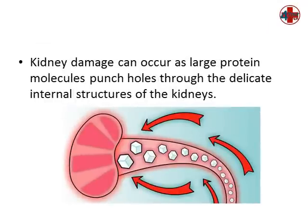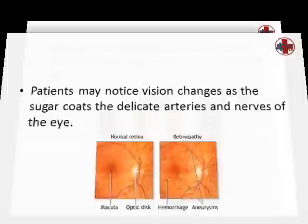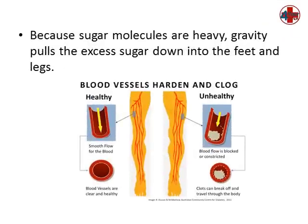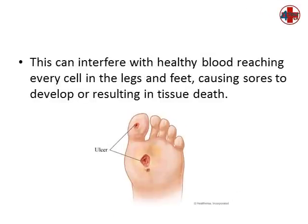Kidney damage can also occur as large protein molecules punch holes through the delicate internal structures of the kidneys. Patients may notice vision changes as the sugar coats the delicate arteries and nerves of the eye. Because sugar molecules are heavy, gravity pulls the excess sugar down into the feet and the legs. The hardening of the arteries is even more extreme in the legs and the feet of diabetic patients. This can interfere with healthy blood reaching every cell in the legs and the feet, causing sores to develop or resulting in tissue death.